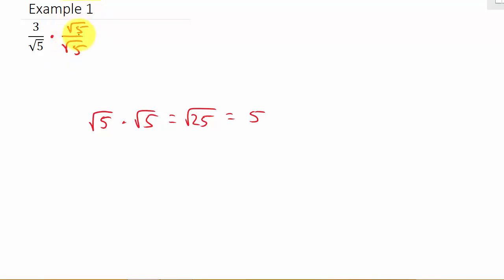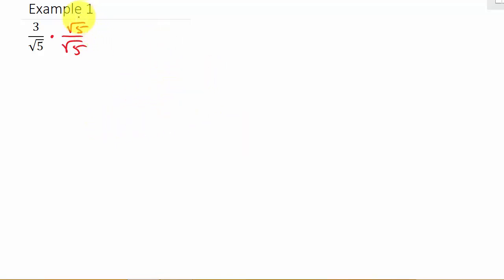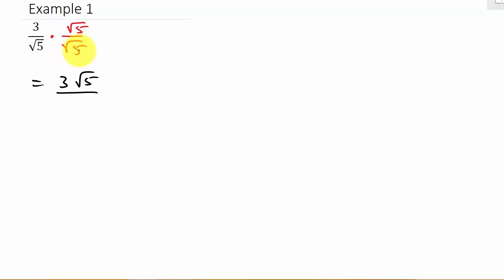This is the same thing as multiplying by 1. Any time you multiply something by 1, you get the same thing back. So since I'm multiplying by 1, I'm not changing the problem. Whatever you multiply to the denominator, you have to also multiply to the numerator. So when I multiply, this gives me 3 square root of 5 over — the square root of 5 times square root of 5 is square root of 25, and the square root of 25 is 5. And so there's our answer.